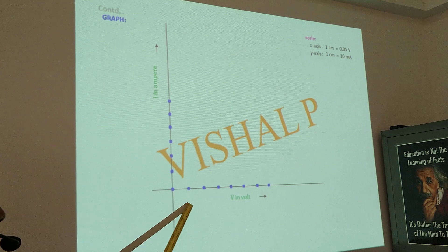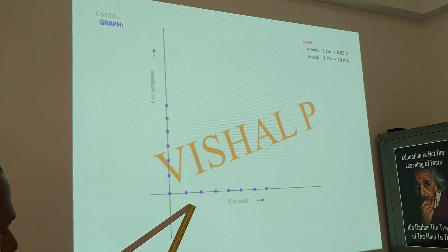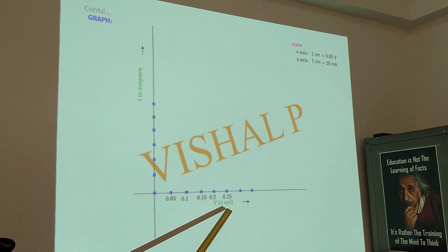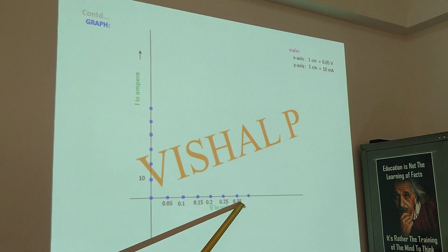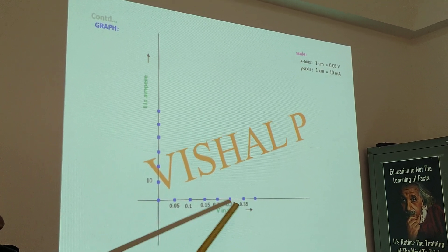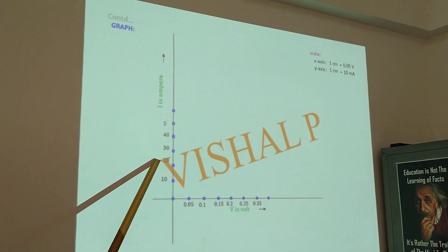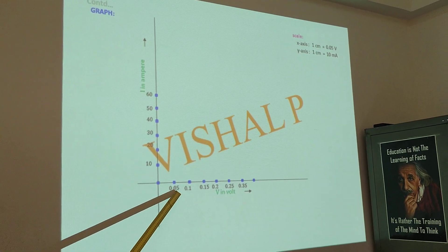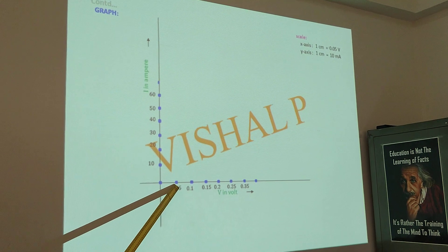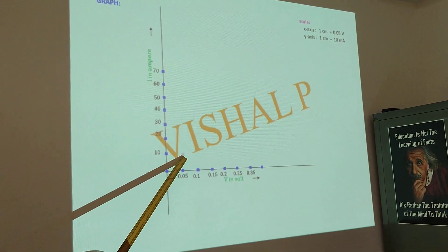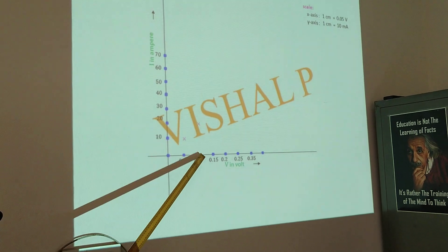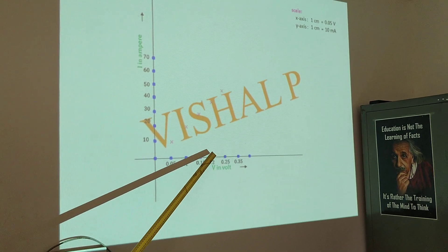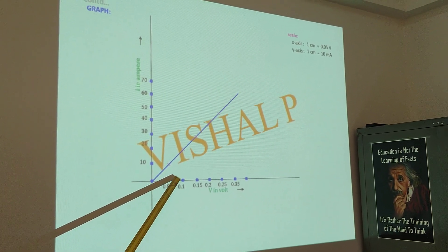You will get the markings like this. The first value is 0.05; second 0.1, 0.15, 0.2, 0.25, 0.3. On the y-axis: 10, 20, 30, 40, 50, 60. For the first reading, for 10 milliampere you got 0.05 volt — the point will be here. For 20 milliampere, 0.1 volt; for 30 milliampere, 0.15 volt; for 40 milliampere, 0.2 volt. Now I join these points and I am getting a straight line.